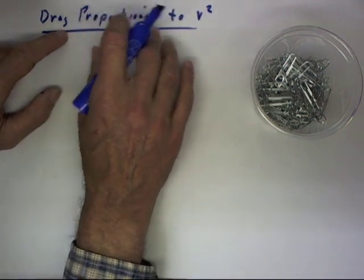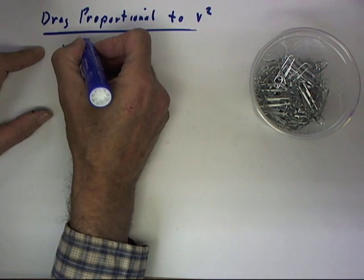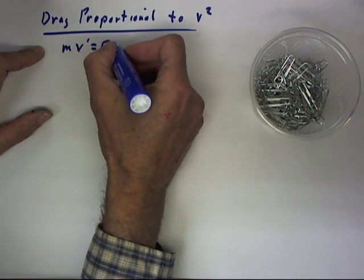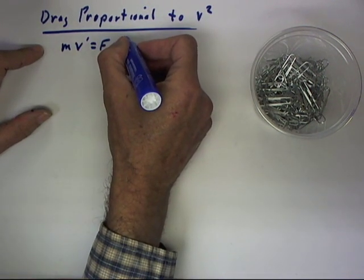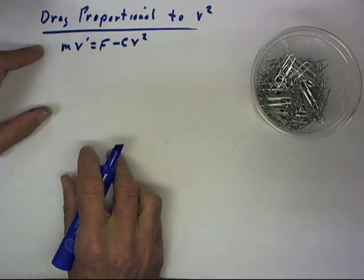This is simply a very common differential equation which has the form mv' = f minus c, we'll use c for the constant, minus cv².